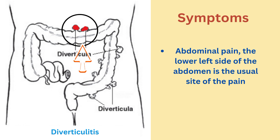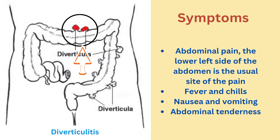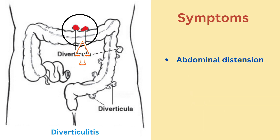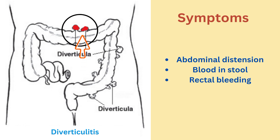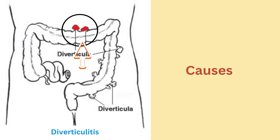The symptoms of diverticulitis include abdominal pain — the lower left side of the abdomen is usually the site of the pain — fever and chills, nausea and vomiting, abdominal tenderness, abdominal distension, blood in stool, rectal bleeding, diarrhea, and constipation.